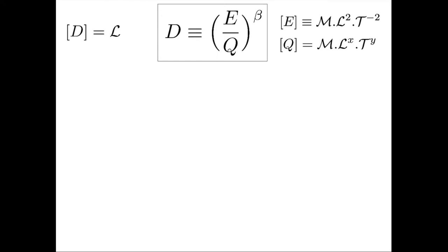Like the prefactor K of the 2 over 5 power law before, the geometric quantity D can be written as a ratio of energy and a yet unknown quantity Q. And as before, the dimensions must match. D is just a length, so this mess of dimensions on the right-hand side must simplify to a length. The time dimension must disappear, which means the time exponent of quantity Q must be the same as the time exponent of energy, so y equals minus 2. Once the dimensions of the mechanical quantity Q are known, the way the final radius varies with the energy is known.